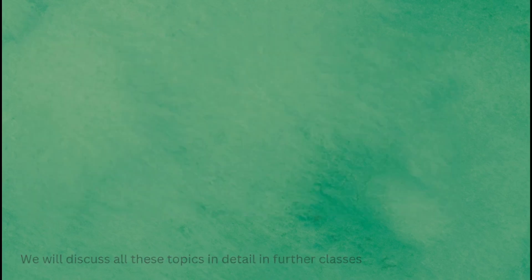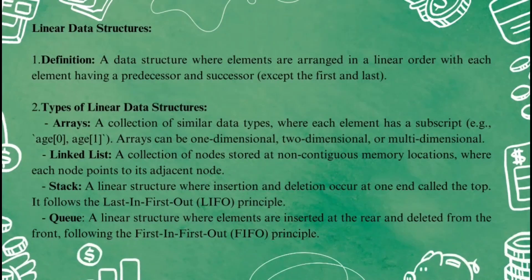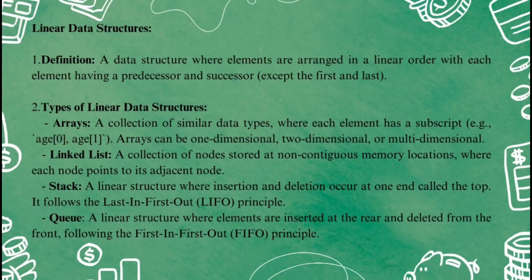Coming to the next slide, we will learn more about linear data structures. A linear data structure is a way to organize data in a straight line. In this structure, each element is arranged one after the other, like a row of books on a shelf. Each item has a predecessor and a successor, except for the first and last items — the first element doesn't have a predecessor and the last element doesn't have a successor. The four main types of linear data structures are arrays, linked lists, stacks, and queues.